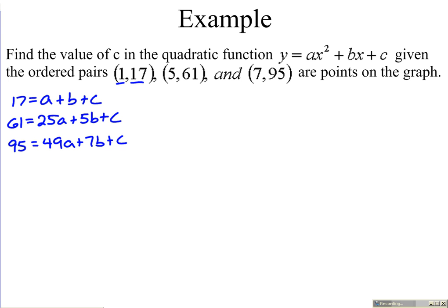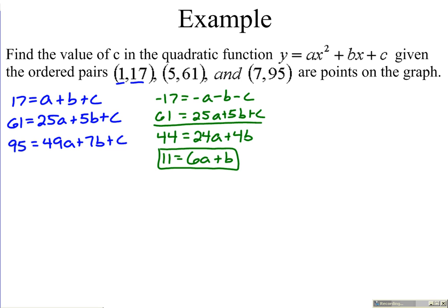So if I take this top equation and multiply it by negative 1, I get negative 17 equals negative a minus b minus c. Second equation I'm going to leave alone and add them up. Negative 17 plus 61 is 44. Negative a plus 25a is 24a. Negative b plus 5b is 4b. The c's drop out, which is what we wanted. Looking at this equation to make the numbers a little bit simpler, divide everything by 4. We're left with 11 equals 6a plus b.